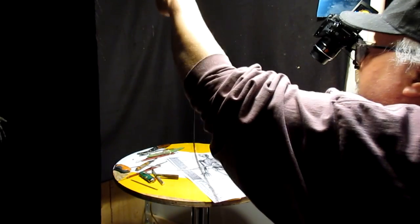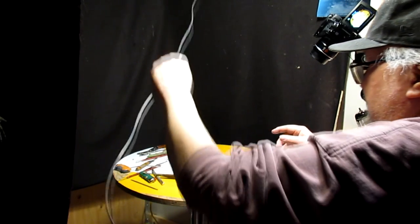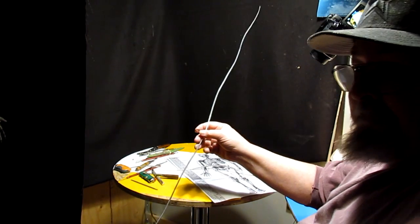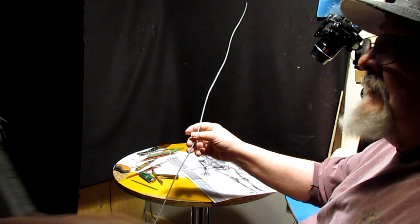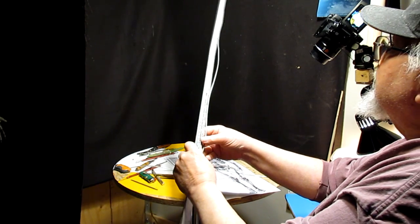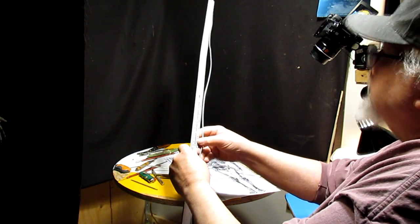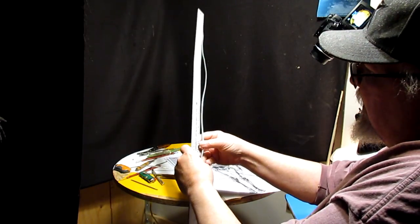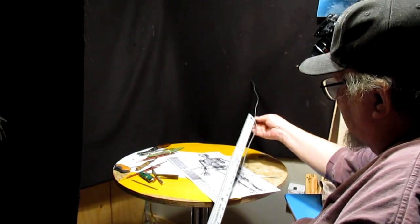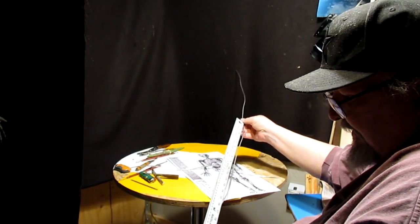So I'm going to get my ruler here, and what I want to do is I want to do about a 40 inch piece of wire. So there's 20 right there, and I want to go another 20 to there.